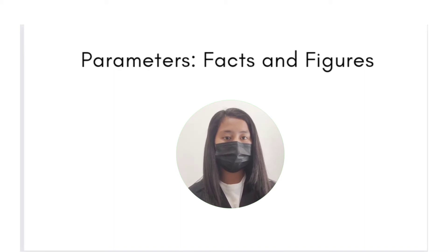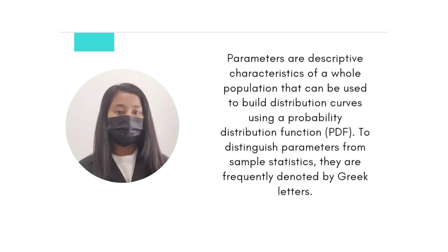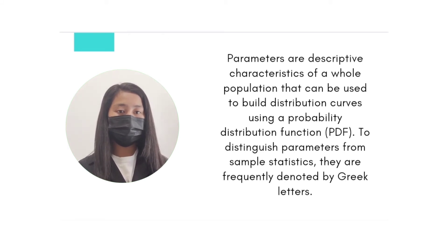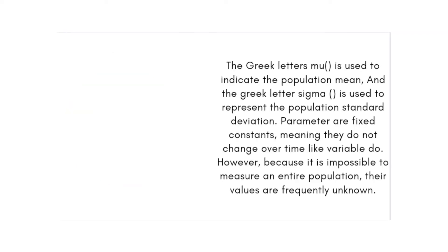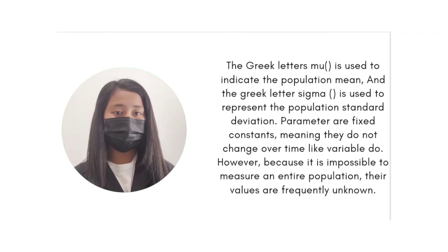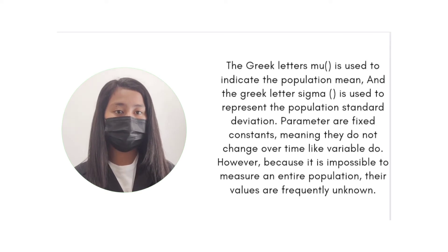Parameters — Facts and Figures. Parameters are descriptive characteristics of a whole population that can be used to build distribution curves using a probability distribution function. To distinguish parameters from sample statistics, they are frequently denoted by Greek letters. The Greek letter mu is used to indicate the population mean, and the Greek letter sigma is used to represent the population standard deviation.